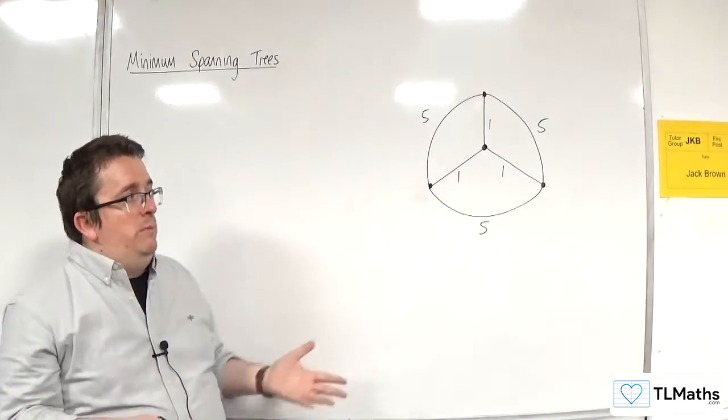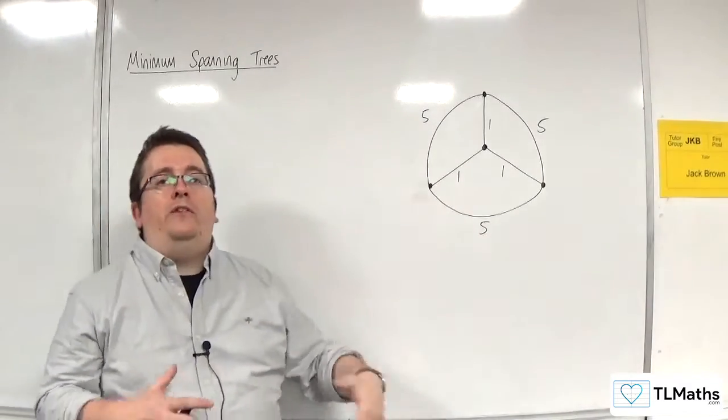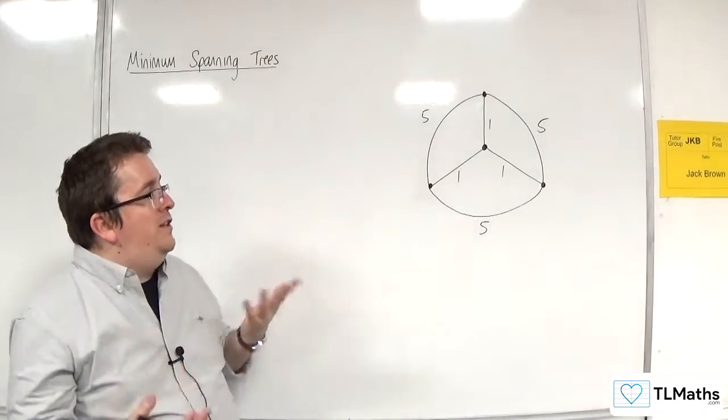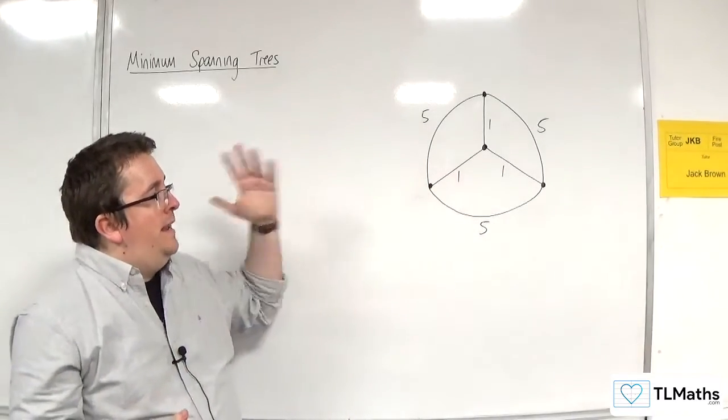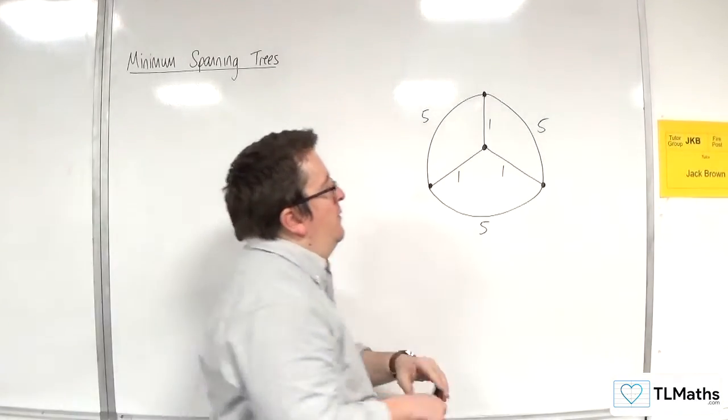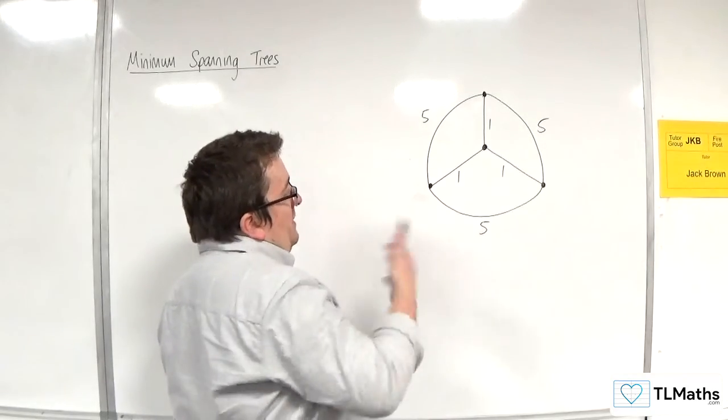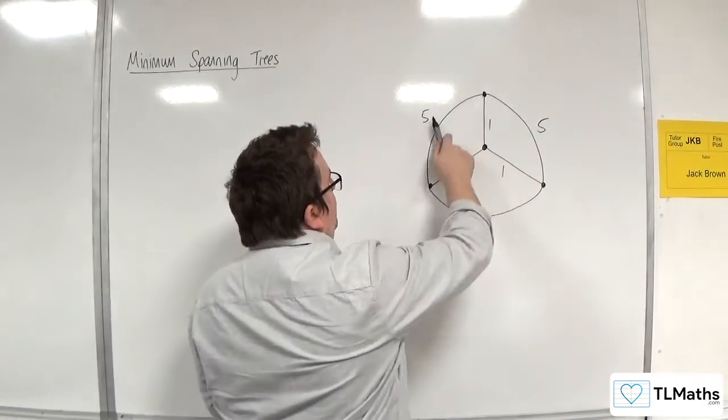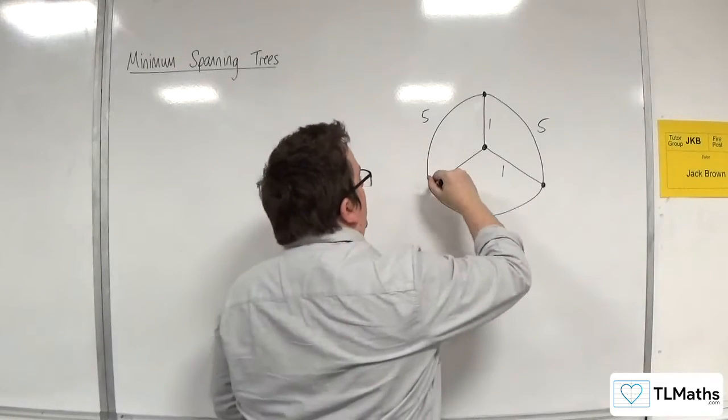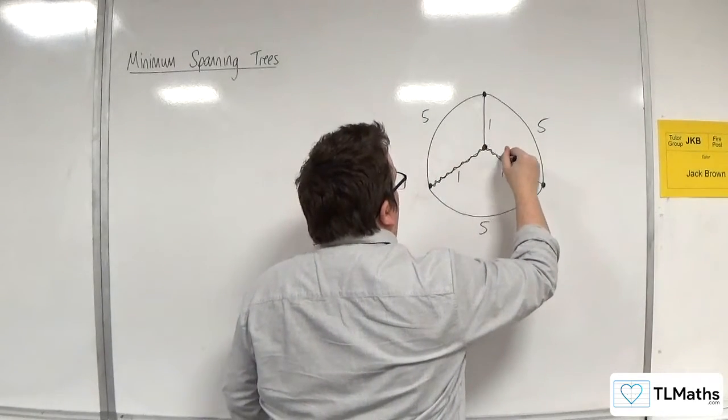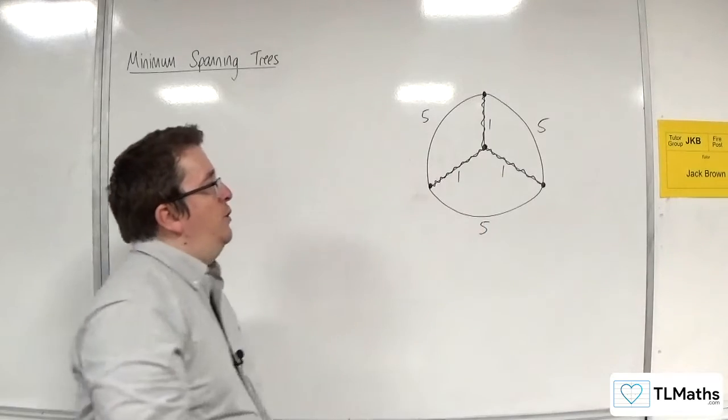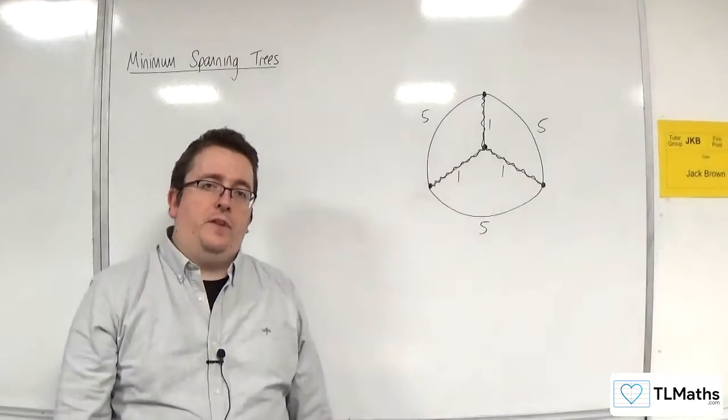Because we want the minimum spanning tree, we want the one that is of least weight. In this case, it's quite obvious, so this one can be done by inspection. Why would I pick these fives when I can just connect them using these ones? So my minimum spanning tree total length will be three in this case.